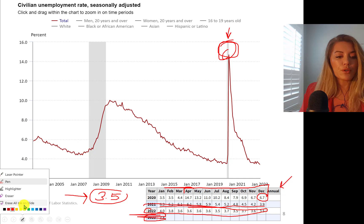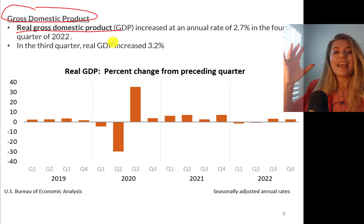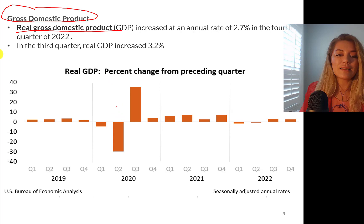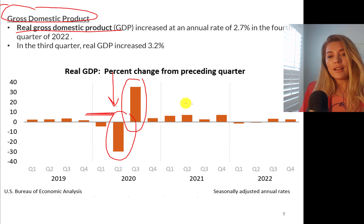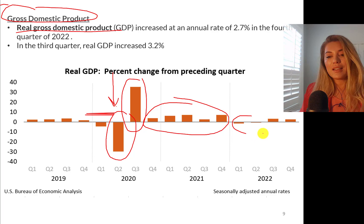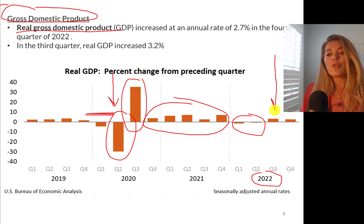Now let's look at gross domestic product — GDP. This is the real gross domestic product. GDP is defined as the total value of goods and services produced in a country within a period of time. During COVID times, in the second quarter, GDP declined by about negative 30-plus percent, and then we bounced back the next quarter — almost like a minor recession. Right now, we are experiencing positive economic growth. The last quarter shows 3.2% growth, so the economy is growing about 2.7 to 3.2%.